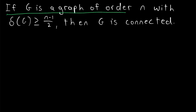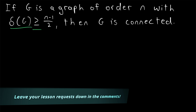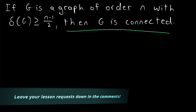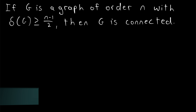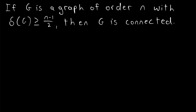If g is a graph of order n with minimum degree delta of g greater than or equal to n minus 1 over 2, then g is connected. In today's lesson, we'll be proving this sufficient condition for a graph to be connected.